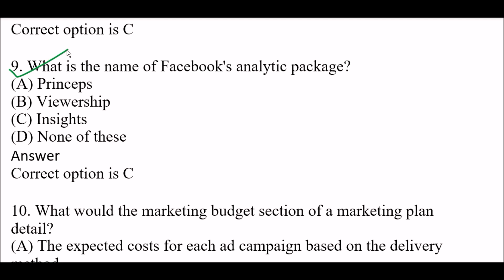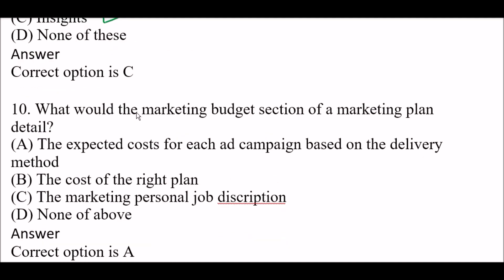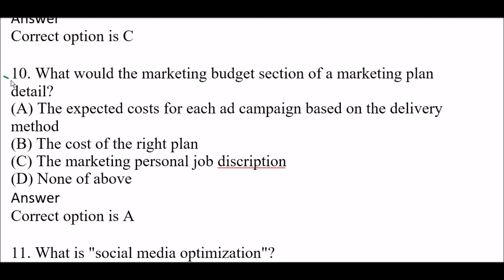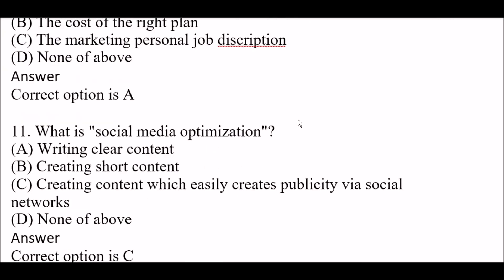Next question: what would the marketing budget section of a marketing plan detail? Option A: the expected cost for each campaign based on delivery method. Option B: the cost of the right plan. Option C: the marketing personnel job description. Option D: none of the above. Right answer is Option A: the expected cost for each campaign based on the delivery method.